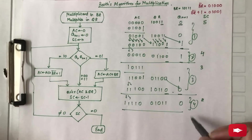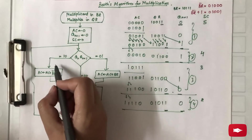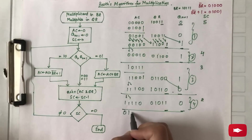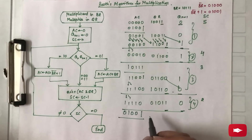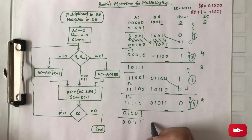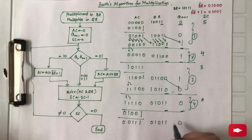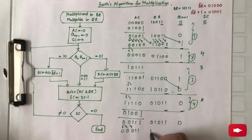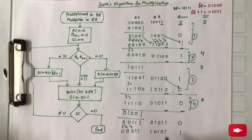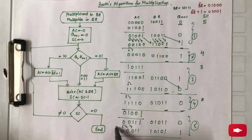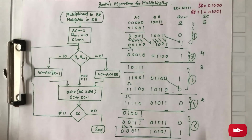Checking the value, it is 1,0 — that means subtraction. Adding the two's complement of B_R to this value: 0, 0, 1, 0, 0, 1 is added, giving the result 0, 0, 1, 1, 1, 0, 1, 0, 1, 1, 0. Performing the shift right, you get 0, 0, 0, 1, 1, 1, 0, 1, 0, 1, 1. This is your fifth step. The number of steps equals the number of bits in Q_R, so this is your final answer which includes your sign bit.